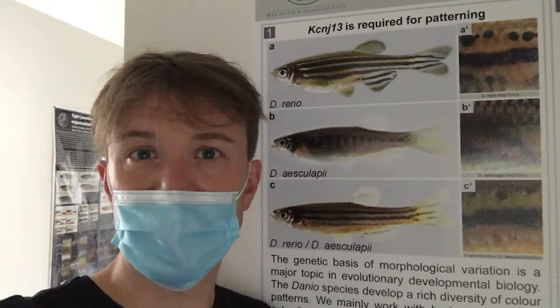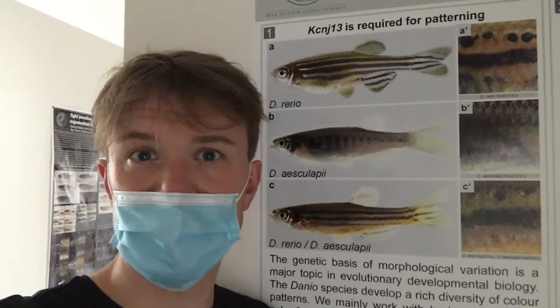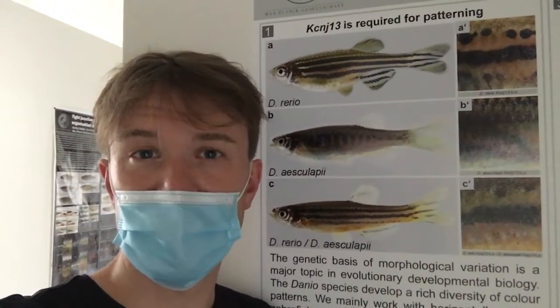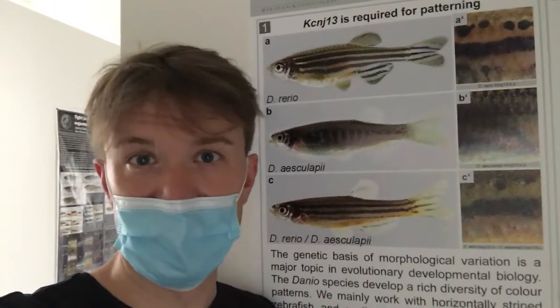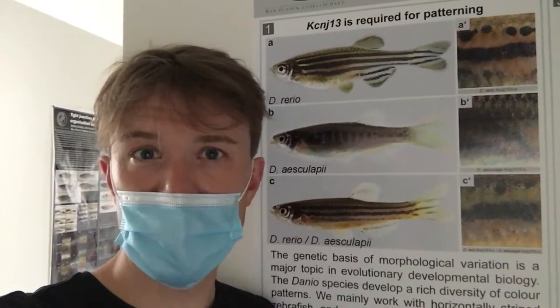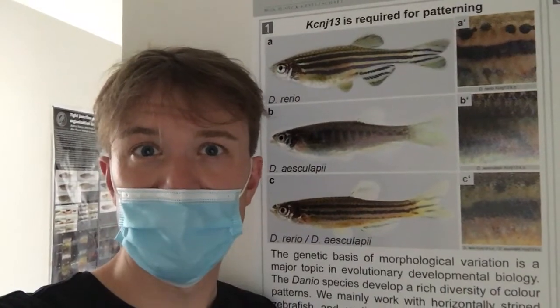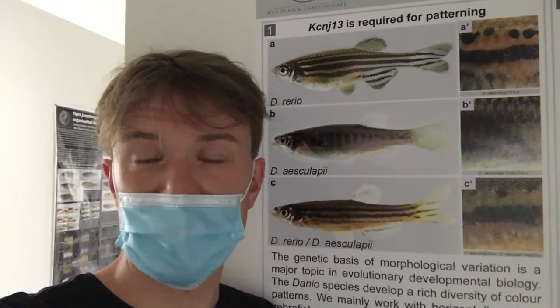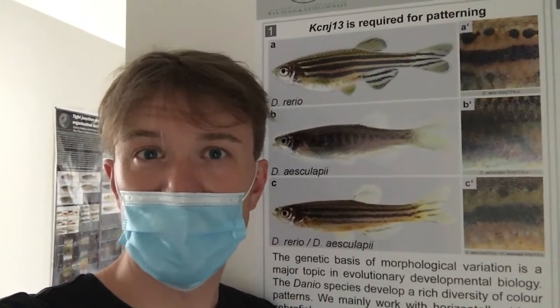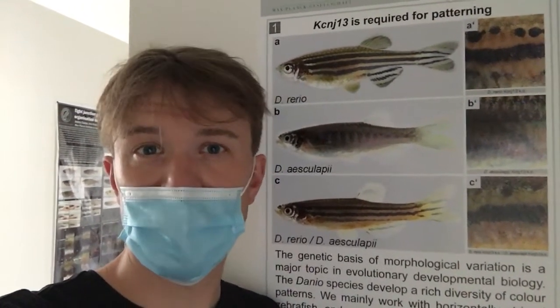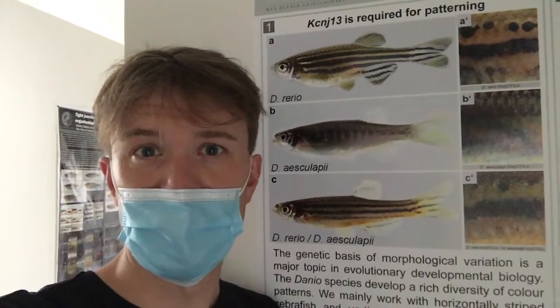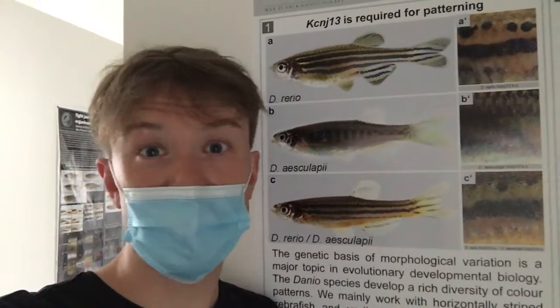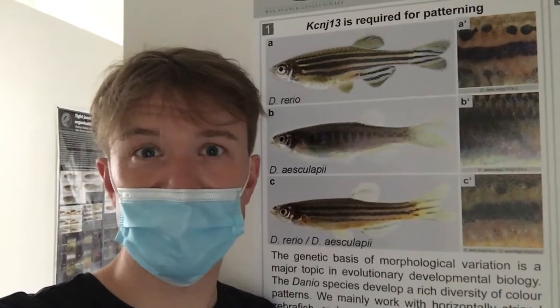We rely on candidate genes that are required for color pattern development in zebrafish, and we test whether these also play a role in Danio esculapii. For this we use the CRISPR-Cas9 system.